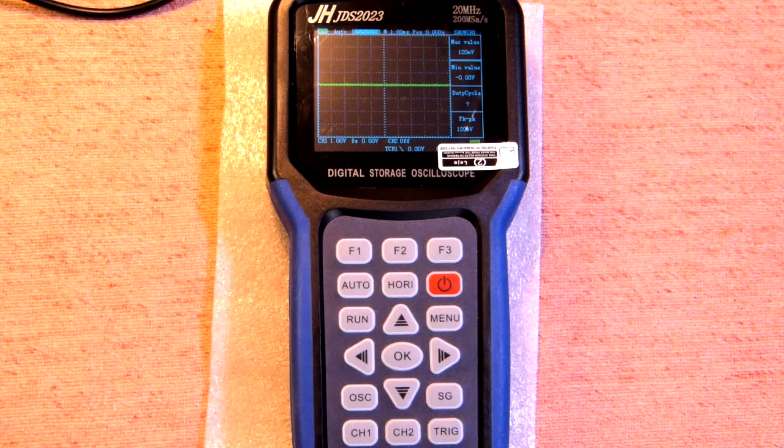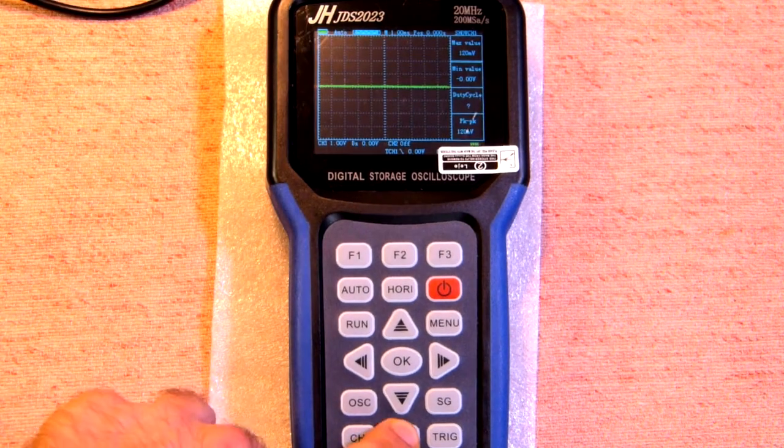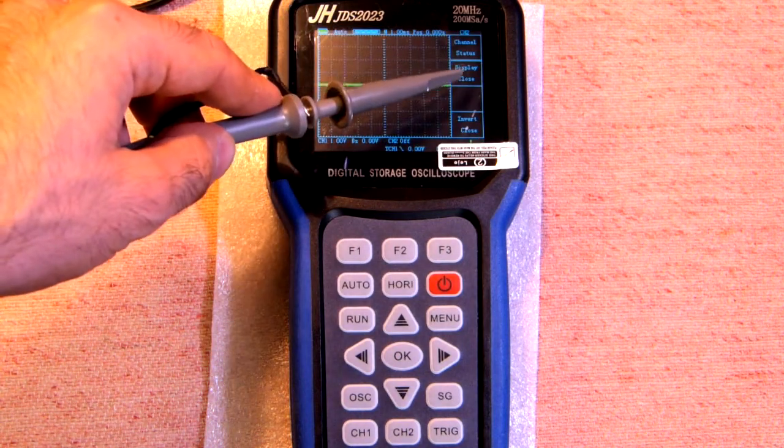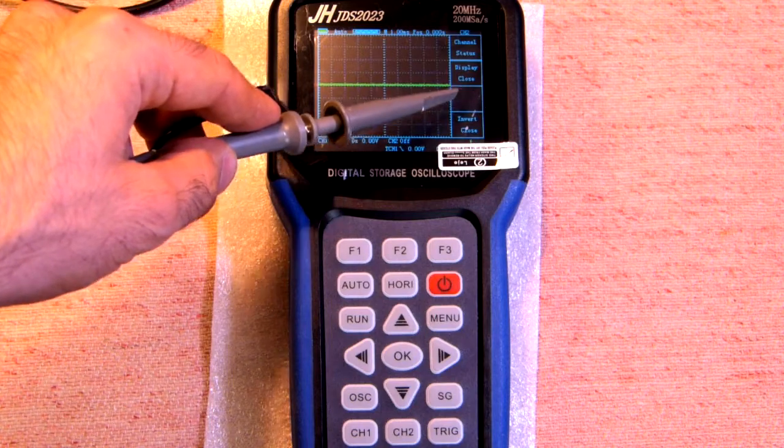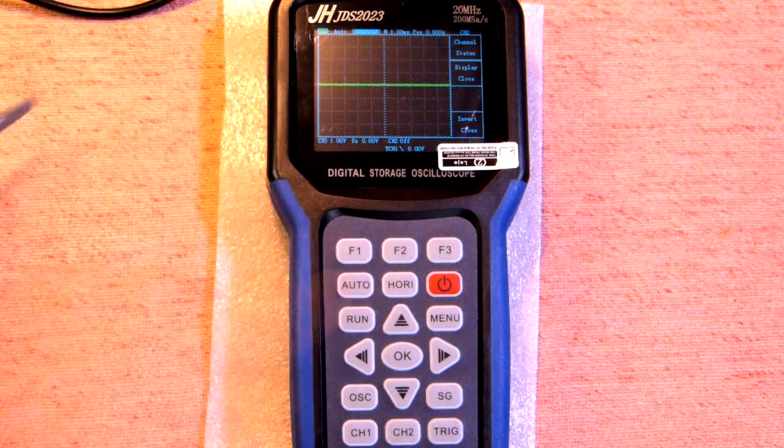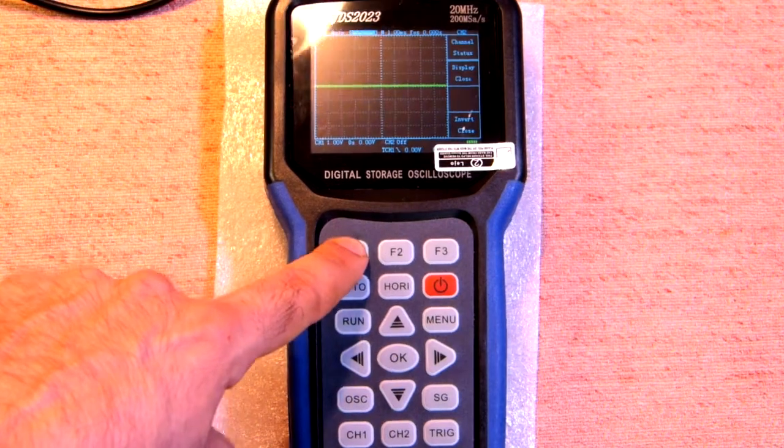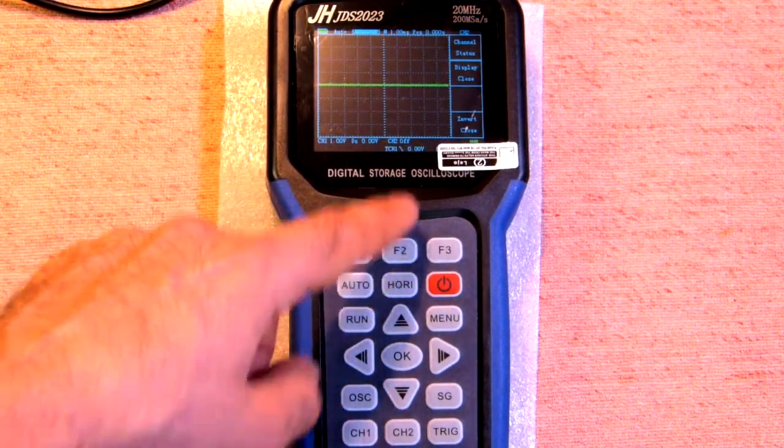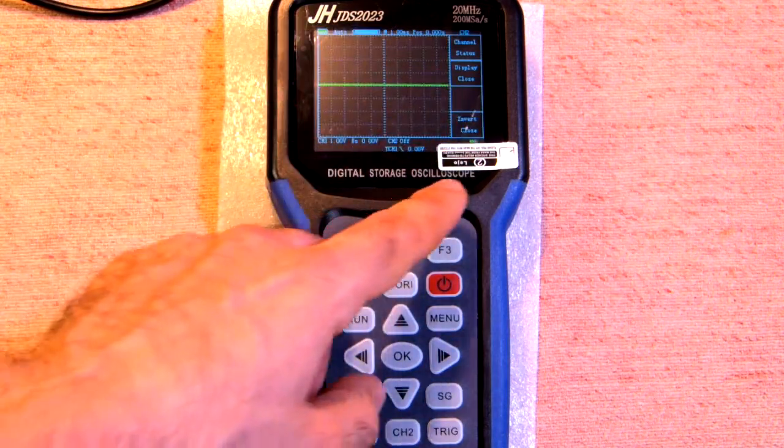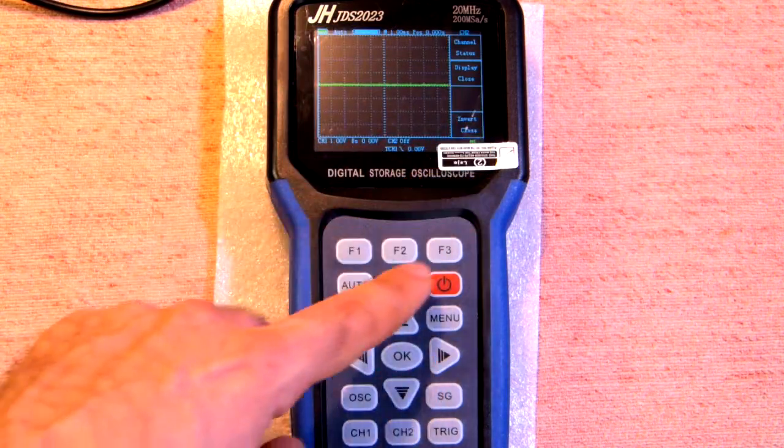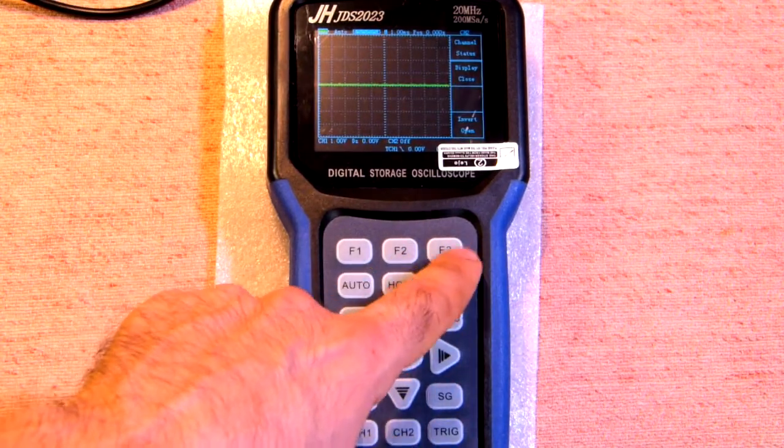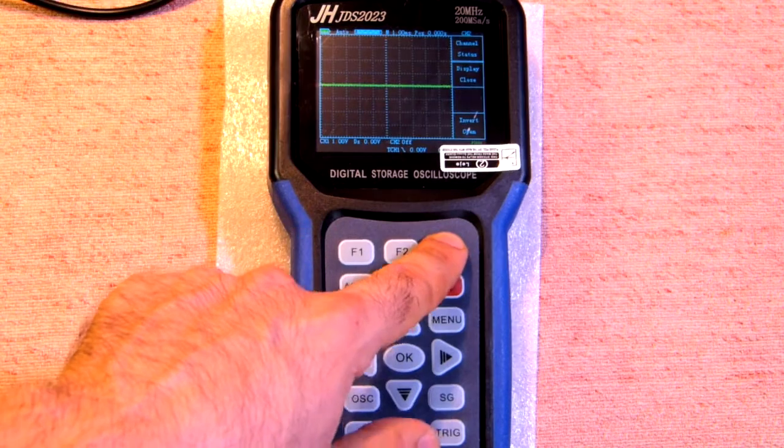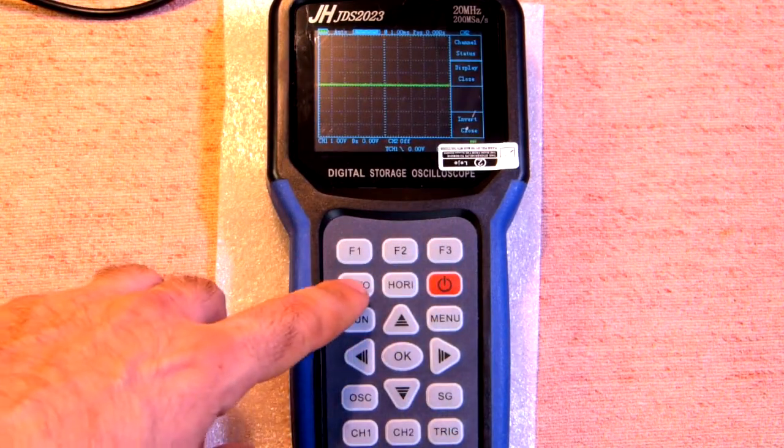Almost the same we have in case of channel 2 but the difference is that here we have no parameter number 2. Display close. Let's press f1. Now it's open. Now it's closed. We have no f2 and invert close in case of pressing f3. We have invert open. Let's close inversion.